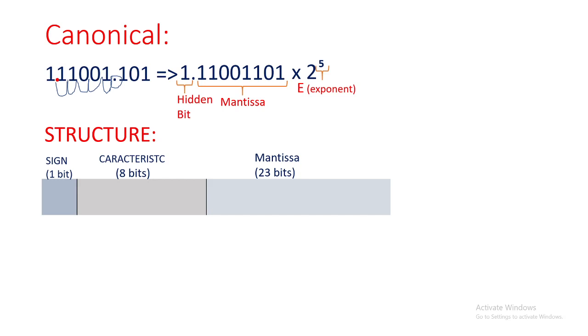Now we know our sign bit is zero because it's positive. We know our mantissa, so let's copy it, and we fill it with zeros till 23 bits.